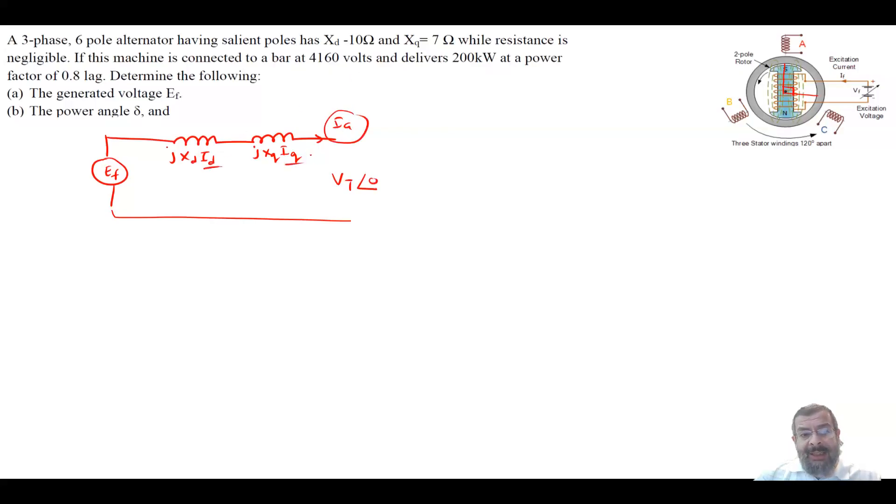But ID and IQ are two unknowns. But IA basically as a vector is equal to IQ plus ID knowing that these two currents are basically 90 degrees from each other. So let's start from applying KVL and let's see how we can come up with a simplified formula to solve this.